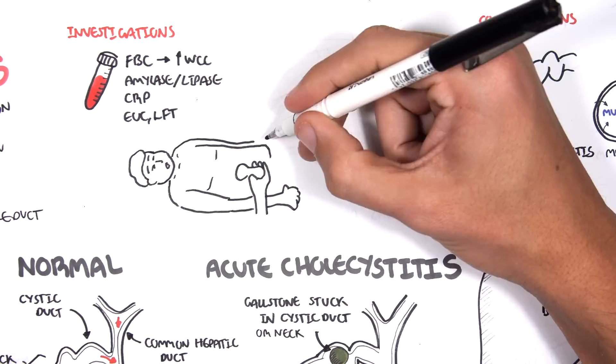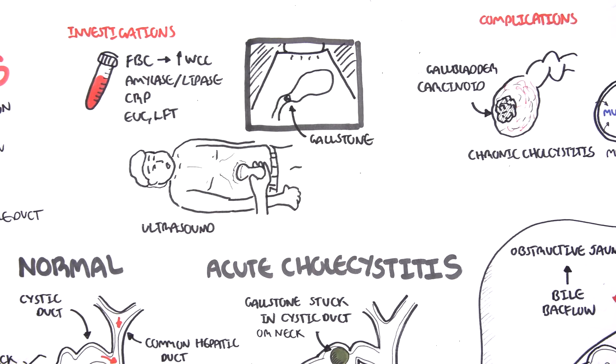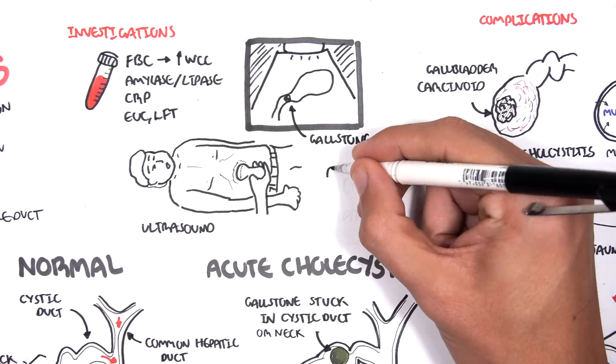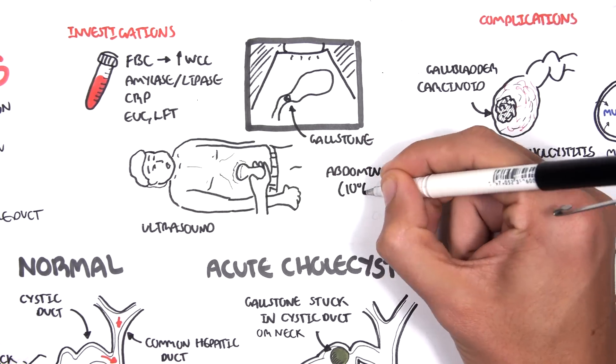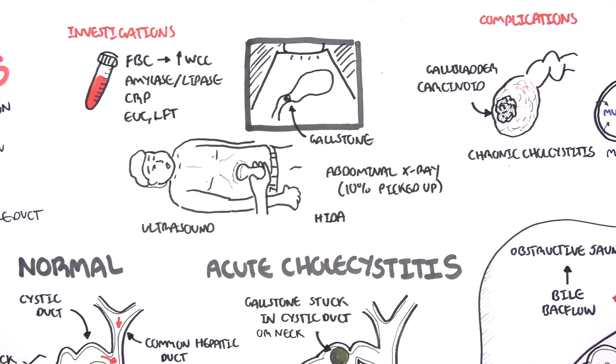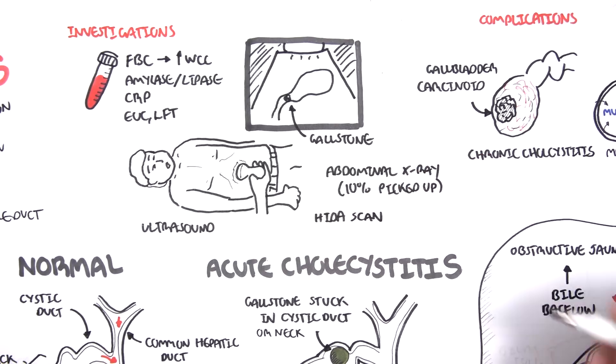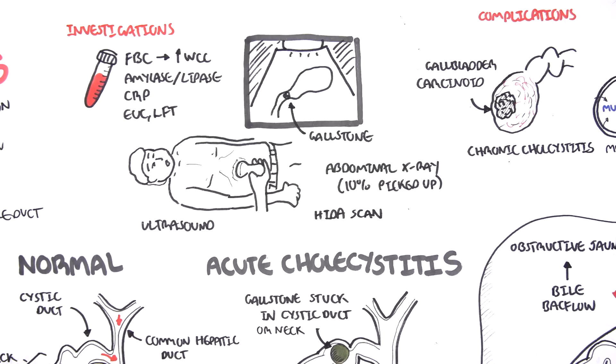Ultrasound is diagnostic and can detect gallstones and is used to elicit murphy's sign too. Abdominal x-ray can only pick up 10% of gallstones. Another imaging technique is the HIDA scan, which is a contrast scan that lights up the biliary tree. If the biliary tree doesn't light up fully, there can be an obstruction.